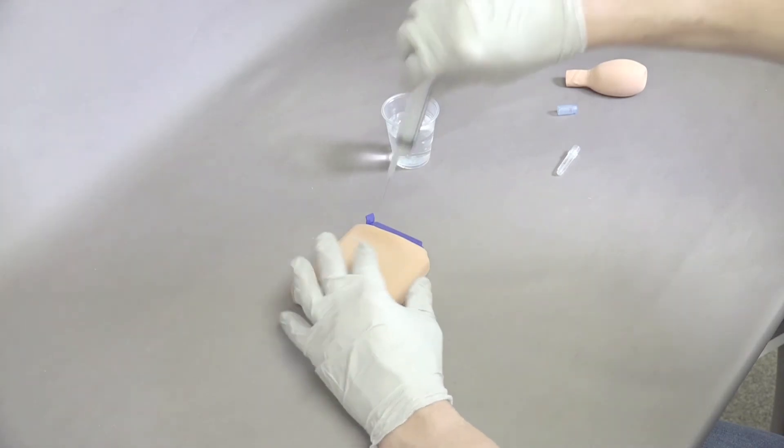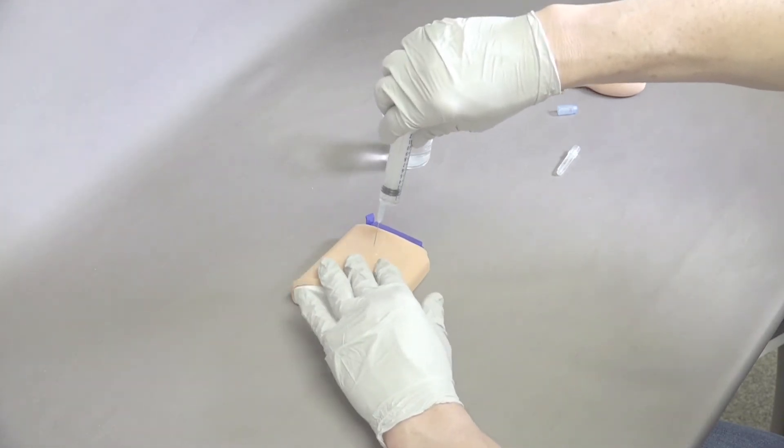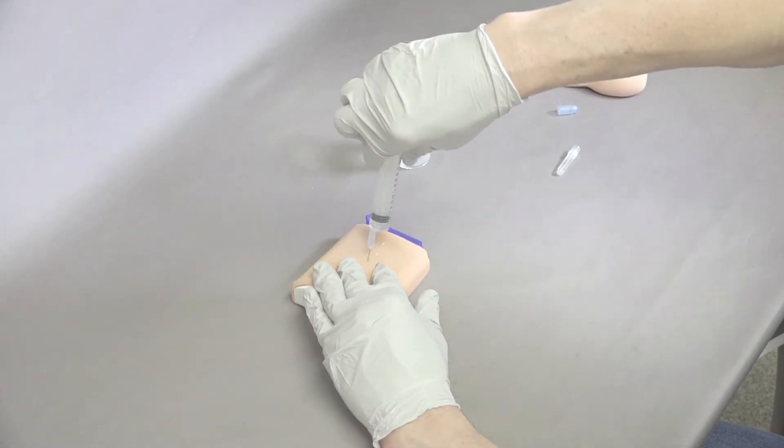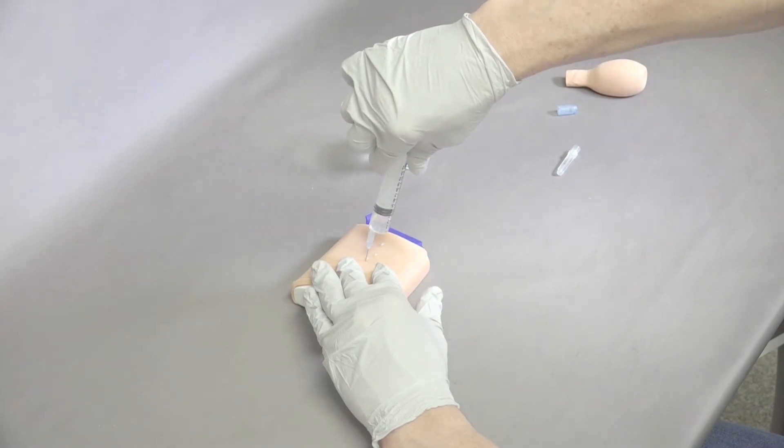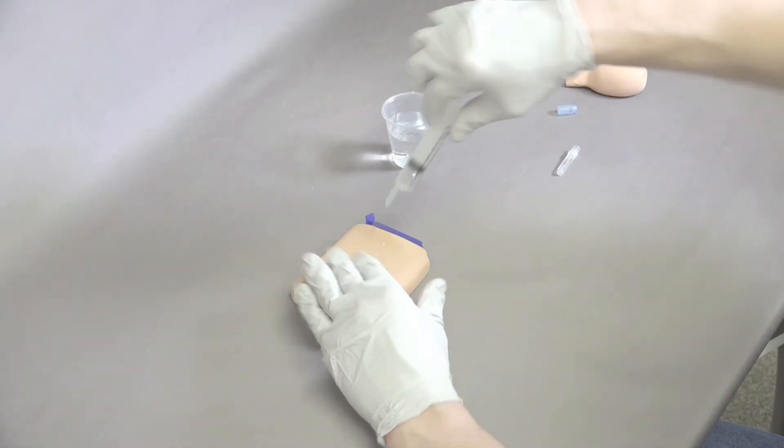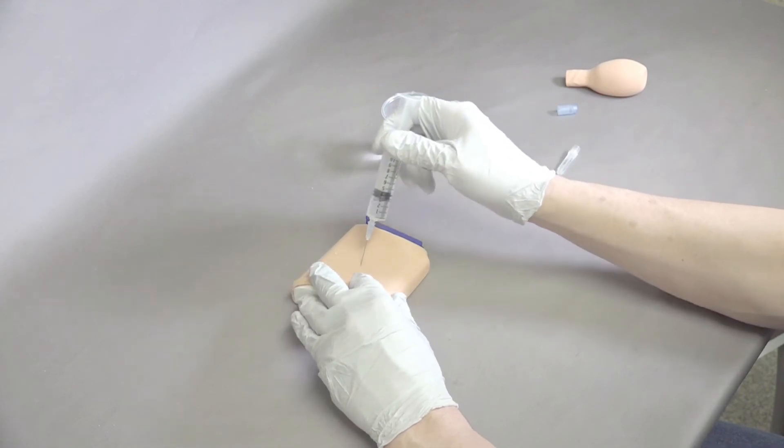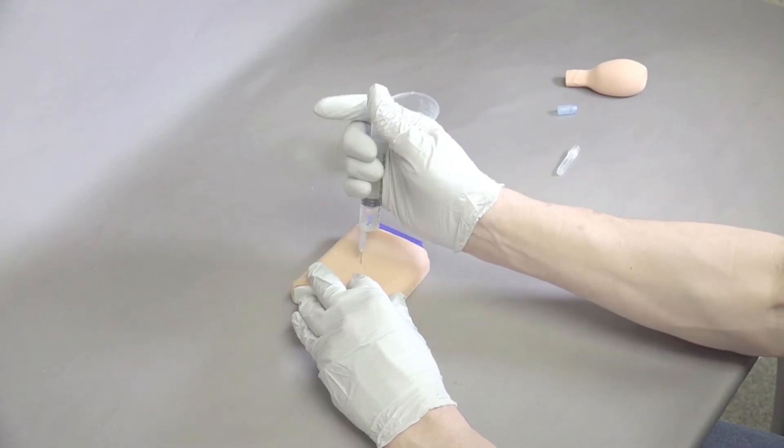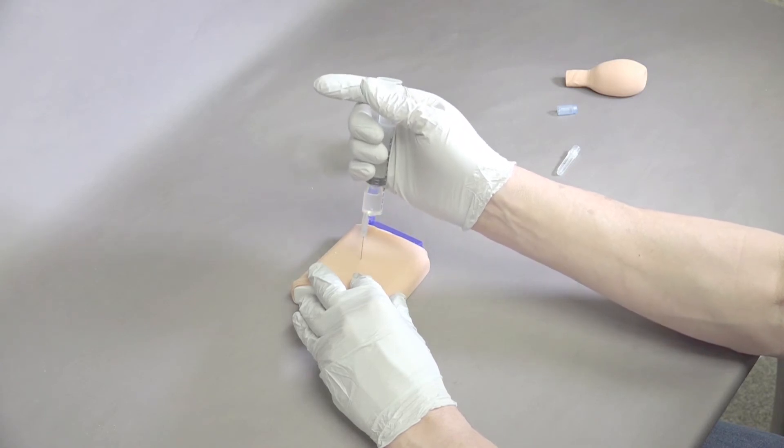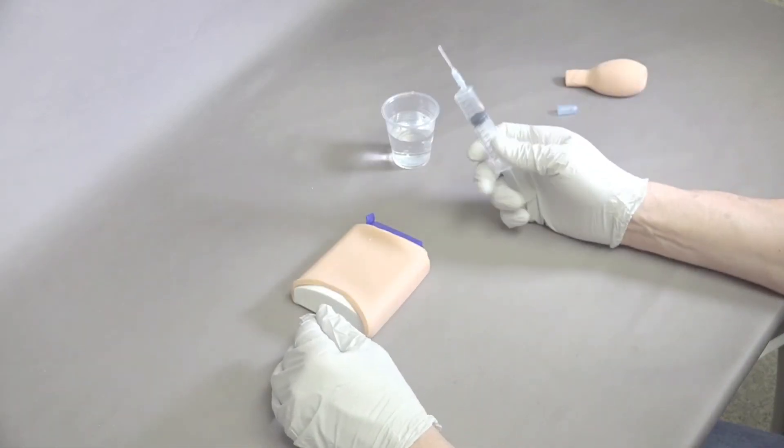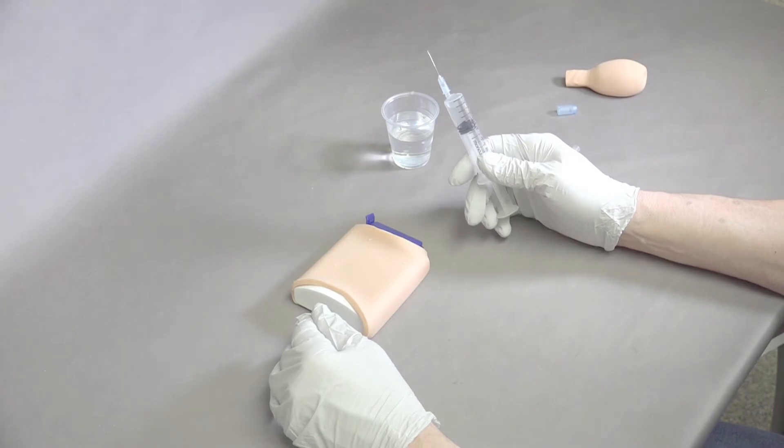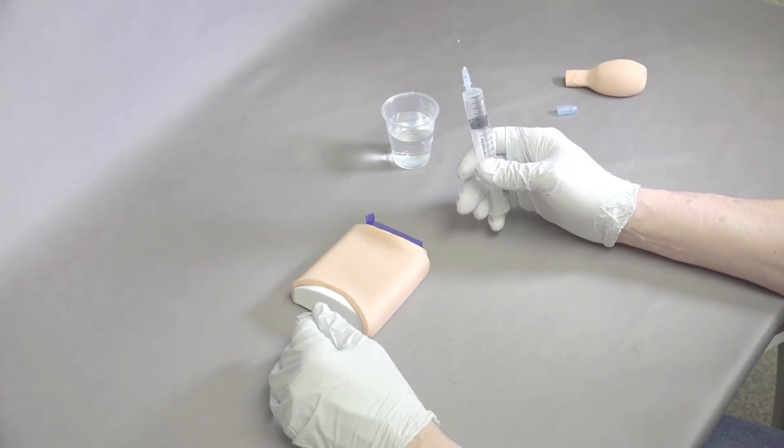The nice part about this model is that we can palpate, identify where it is, and pull more urine out. Palpate, come in, and pull more urine out until we've removed probably the first 12 ml. There needs to be at least 12 ml of fluid in here to be effective, otherwise it flattens out.